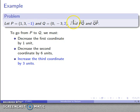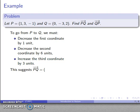The third coordinate goes from -1 to 2—it's got to increase by 3 units. This suggests that the vector from P to Q has to be (-1, -6, 3): that's my decrease of 1 unit, my decrease by 6 units, and my increase by 3 units.